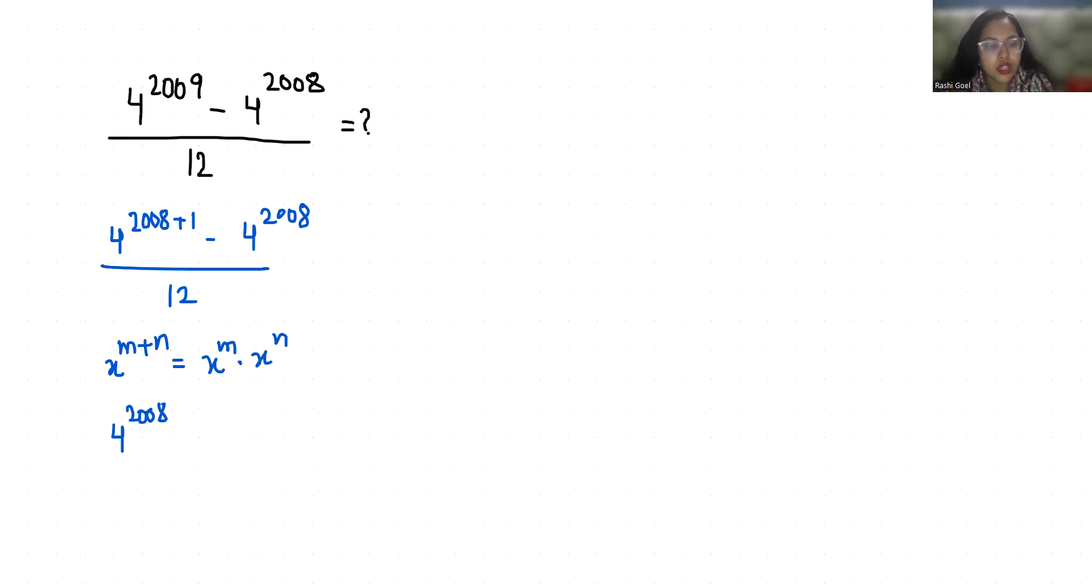4 power 2008 by 12. Now if I take 4 power 2008 common from numerator, so it becomes 4 minus 1 by 12. So 4 power 2008 times 3 by 12, so we can cancel out this, gives us 4.